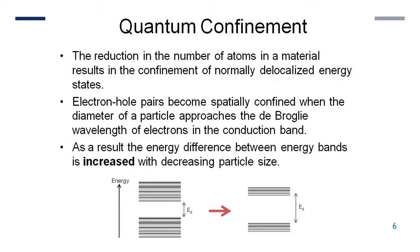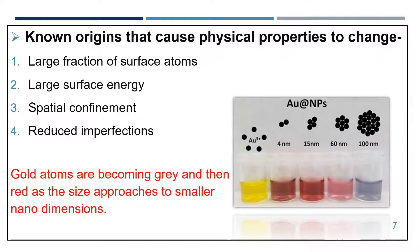As a result, the energy difference between energy bands increases with decreasing particle size. Some known origins that cause physical properties to change are: large fraction of surface atoms, large surface energy, spatial confinement, and reduced imperfections. As you can see in this figure, gold atoms become grey and then red as the size approaches smaller nano dimensions.